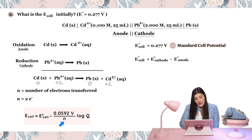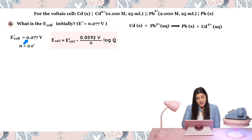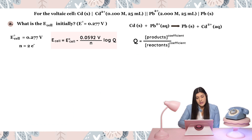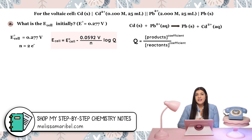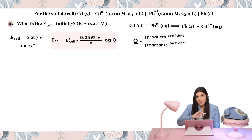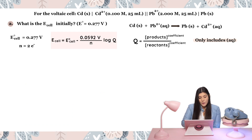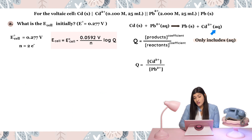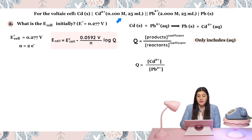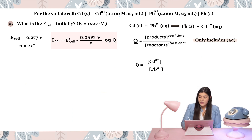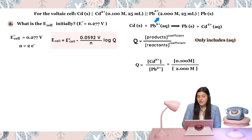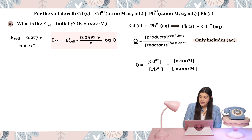Now I need to find Q — the reaction quotient — which applies when our system is not at equilibrium. We always want the concentration of our products on top and the concentration of our reactants on the bottom, and we never include solids, only aqueous solutions. So Q has cadmium 2-plus on top and lead 2-plus on the bottom. We're given the concentrations: cadmium is 0.1 on top, lead is 2 on the bottom. Dividing those gives Q = 0.05.